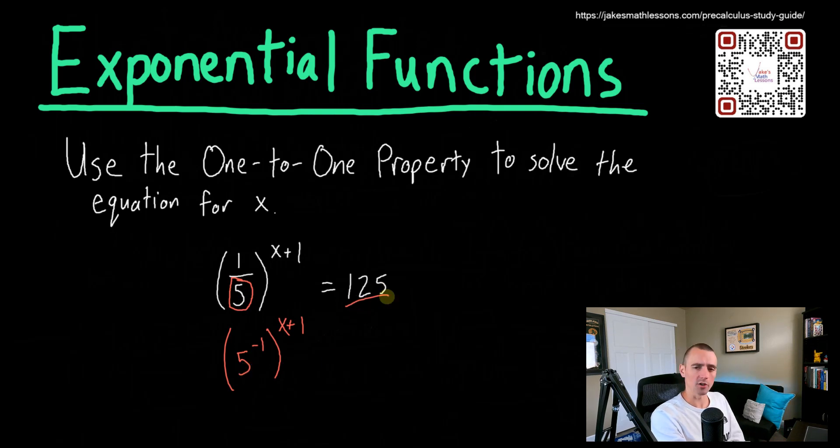The reason why that's nice is look at the number we have over on the right side of our equation, 125. 125 is actually a number we can get to by raising five up to some power. Five times five is 25, and then 25 times five is 125. So basically, five raised up to the third power, if we multiply five by itself three times, that gives us 125. So we can rewrite the right side of our equation as five cubed.